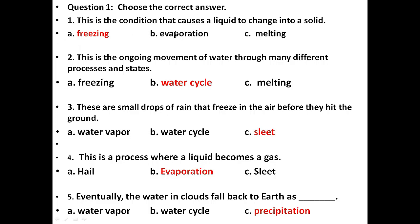Number 1: This is the condition that causes a liquid to change into a solid. Options are freezing, evaporation, melting. The answer is freezing. If you keep liquid water into a freezer, after some time the liquid water becomes solid — the liquid state is converting into a solid state. This is called freezing. Answer is A.